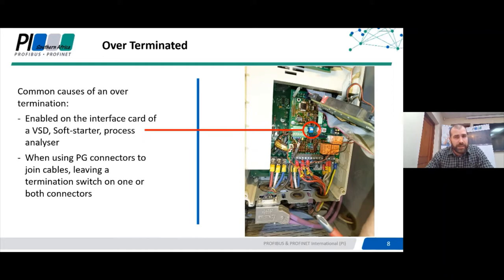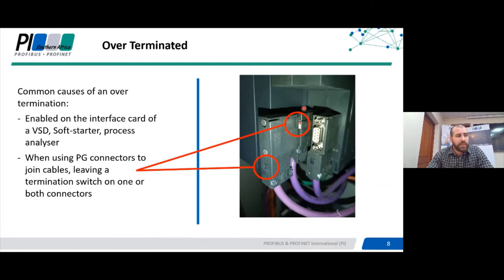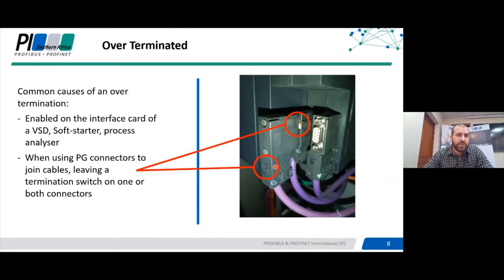Another way over-terminations are typically enabled is through the interconnection of cables using piggyback plugs. This isn't best practice — there's nothing inherently wrong with it and the system will work, but you can accidentally create over-terminations. You have an incoming cable going to a plug connecting the device and the signal goes back out, but in this case we have a double over-termination because there's a terminating resistor enabled on both the bottom and the top plug, which will definitely bring down signal voltages and affect communications across the entire bus. Make sure both terminations are off, or alternatively just wire into one cable rather than connecting cables this way.